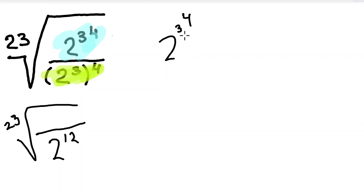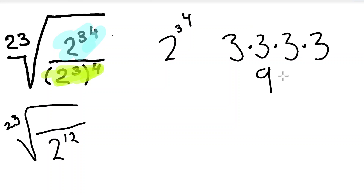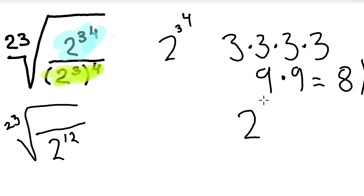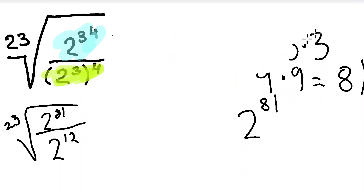For the first exponent, we evaluate 3 to the power of 4, which means multiplying 3 by itself 4 times: 3 times 3 times 3 times 3, which is 9 times 9, equal to 81. So 3 to the power of 4 is 81, which means 2 to the power of 3 to the power of 4 is the same as 2 to the power of 81.